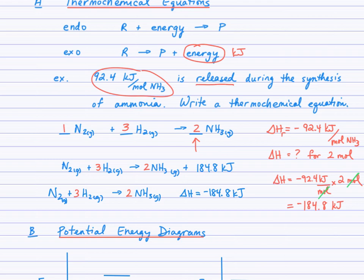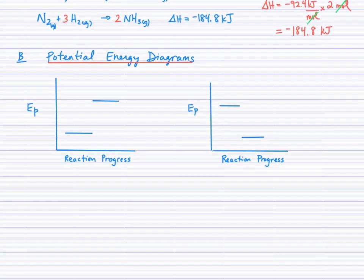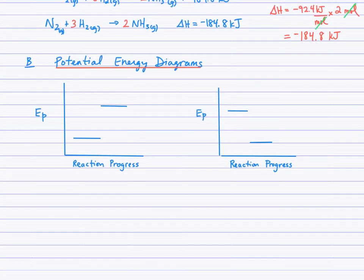The second method of representing these enthalpy changes is in a potential energy diagram. You have already seen these introduced in earlier lessons. The y-axis is labeled potential energy and the horizontal axis, the x-axis, reaction progress. That just means as the reaction proceeds. We have our reactants. Remember this is the origin, so this value here would be a lower potential energy than this one up here.